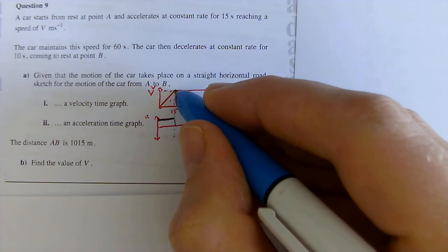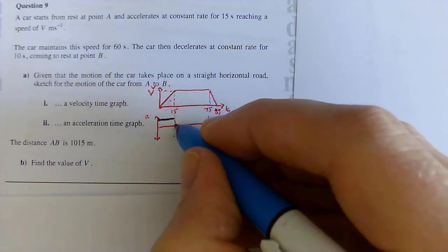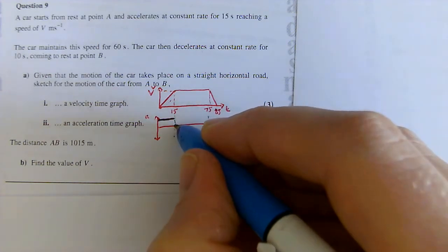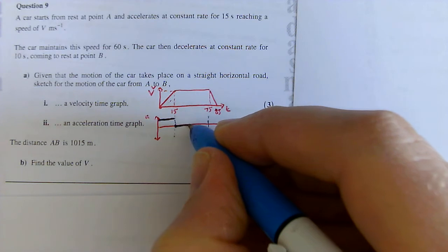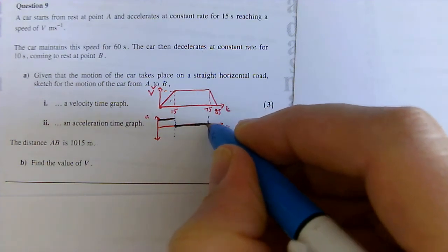Now, at this point, it changes really suddenly from being positive to being 0. So, there should be a break in my curve. It doesn't happen gradually. They don't need to be connected. In fact, they must not be connected. And up until 75 seconds, I've got an acceleration of 0.